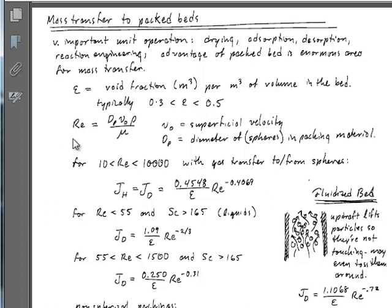The Reynolds number is also an important parameter, involving the superficial velocity and the packing diameter, not the diameter of the bed. The basic way to find a correlation for mass transfer or heat transfer coefficients in one of these beds is to look up Perry's handbook, where you'll find correlations listed according to different Reynolds number ranges and whether they apply to the gas phase or liquid phase.